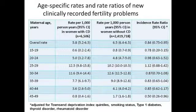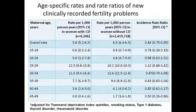The median difference between the new clinically-recorded fertility problem and celiac disease diagnosis was 2 months. In women with celiac disease, the rate of new clinically-recorded fertility problems was highest in the 25–29 year age group at 12.5 per 1,000 person-years. In women without celiac disease, the rate was highest in the 30–34 year age group at 12.6 per 1,000 person-years. Across all age groups, however, there was no statistically significant difference between the rates of new clinically-recorded fertility problems in women with and without celiac disease.